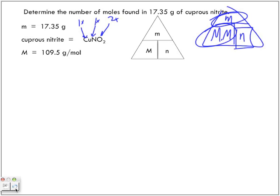So from this, what are we covering up? The n. We're covering up the n and we have the mass on top of the molar mass, so what function are we doing? We're doing division between these two, because the n is on top of the molar mass. So we get 17.35 grams divided by 109.5 grams per mole. What cancels out? Grams. So our answer will be in moles.